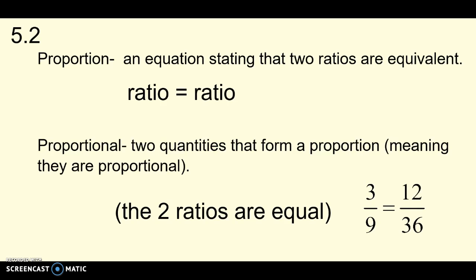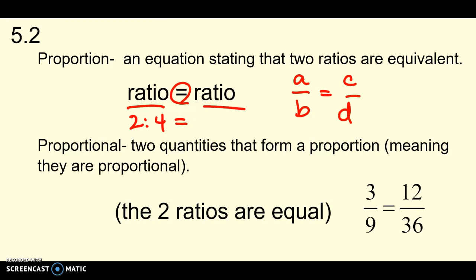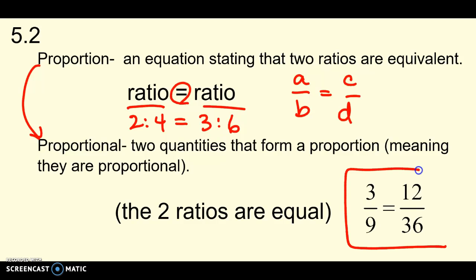A proportion is an equation stating that two ratios are equivalent. When you have one ratio equal to another ratio, that makes a proportion — a lot of times it looks like a fraction equal to another fraction. We can also write ratios as two to four equal to three to six. When we say something is proportional, that means the two quantities that form the proportion, the two ratios, are equal. So if the two ratios are equal, they form a proportion and they are proportional.